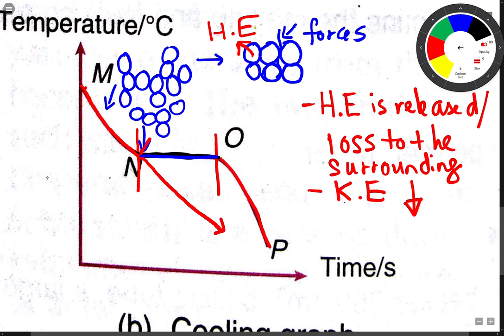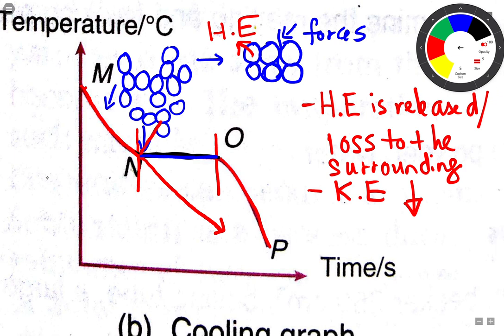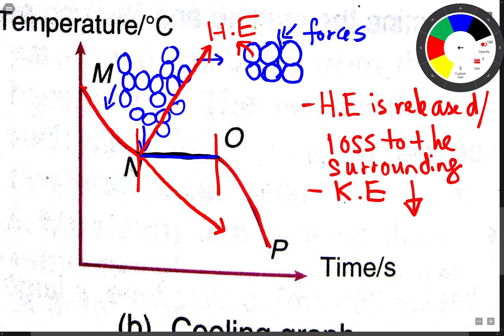The heat energy released by the particles means the temperature will not decrease at this part. That is the reason why the temperature remains constant here — because the heat energy lost to the surrounding is balanced by the heat energy released by the particles.